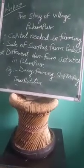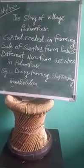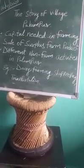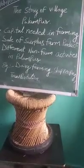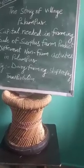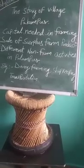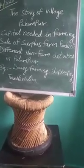Question five: What is multiple cropping? Answer: Multiple cropping means growing more than one crop on the same piece of land in a year.